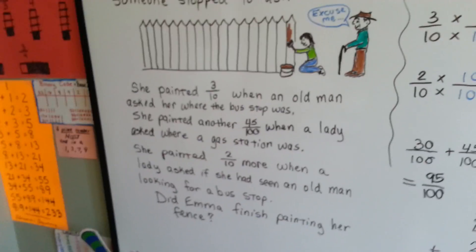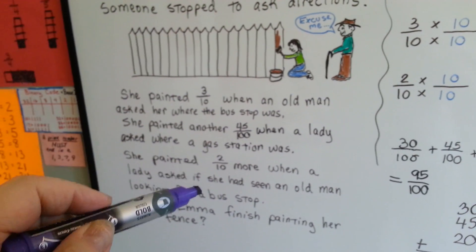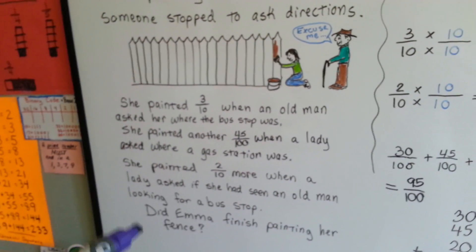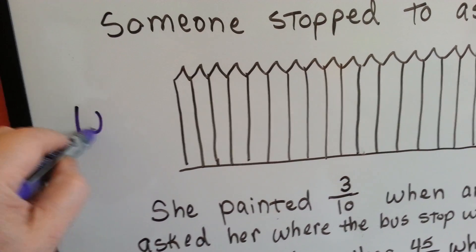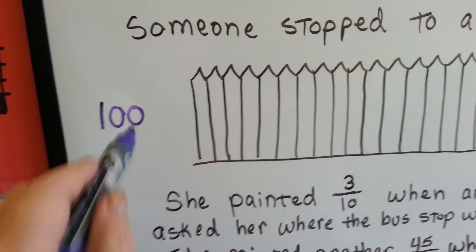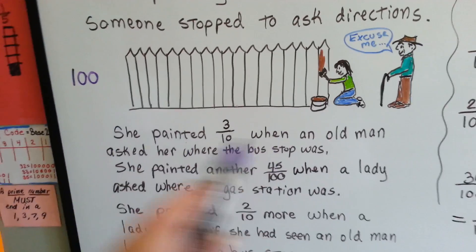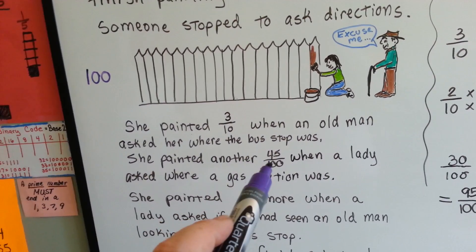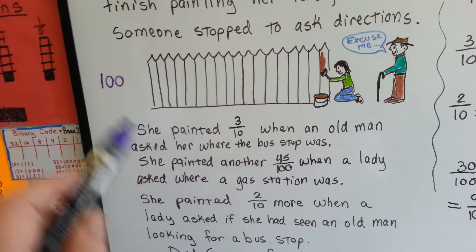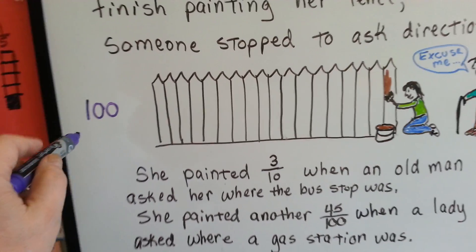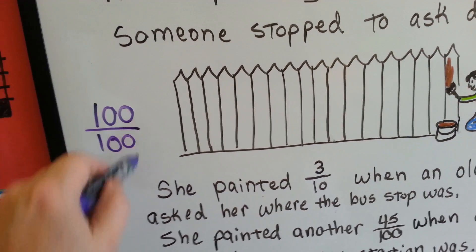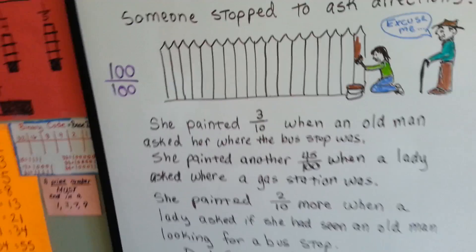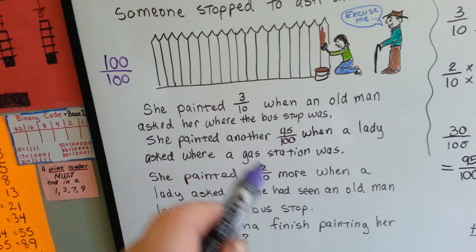So we need to add up these fractions to see if it totals 100%, right? Because if she finished painting the whole fence, then it would be 100. That would be all of it. Because 45 one-hundredths is a portion — 100 one-hundredths would mean she finished painting the whole fence. So that's what she's trying to get to. We need to add them up, but the denominators are different.